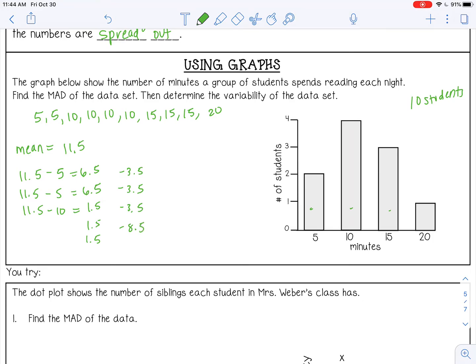So then I'm going to change all of those to positive. So I have 6.5, 6.5, 1.5, 1.5, 1.5, 3.5, 3.5, 3.5, and 8.5. And then lastly, I need to find the average of all those. So add all those together, divide by 10, pause the video now and try that.